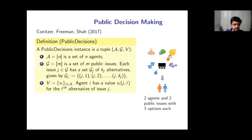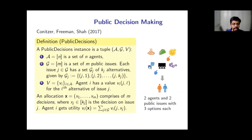For example, if Alice wants pizza while Bob doesn't, Alice might compromise and agree to watch a movie Bob wants instead. The idea is that collectively made decisions must also be reasonably fair to all participants. An allocation here simply comprises m decisions, where xj is the decision on issue j.